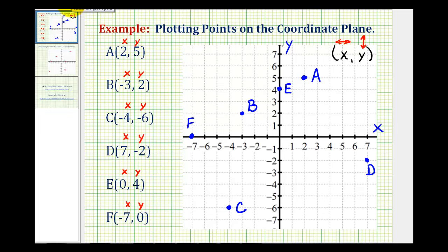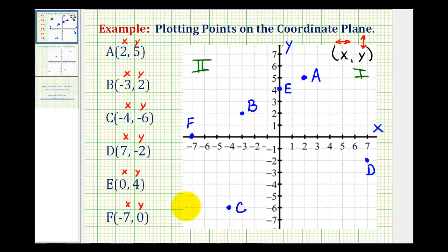The coordinate plane has four quadrants. Quadrant one is where both the x and y-coordinates are positive. Quadrant two is where the x-coordinate is negative and the y-coordinate is positive. Quadrant three is where both the x and y-coordinates are negative. And quadrant four is where the x-coordinate is positive and the y-coordinate is negative.